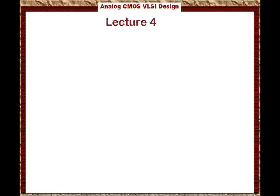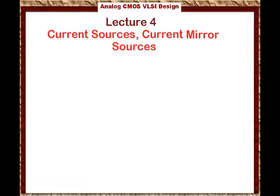Welcome folks to lecture 4. Lecture 4 is a very exciting lecture because we discuss current sources and current mirror sources. Inside the CMOS analog circuit, how can we bias our amplifiers? We bias our circuits or amplifiers using current sources. In this particular lecture, we're going to talk about how we create current sources and how we implement them inside the IC chip, which is a very exciting and unique way of looking at it.